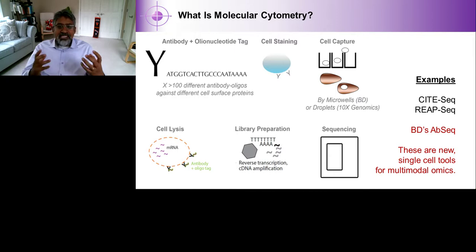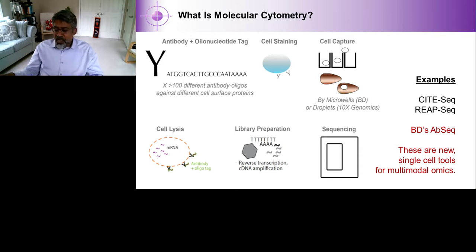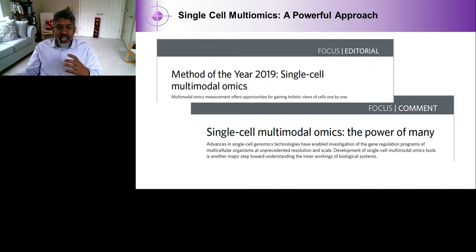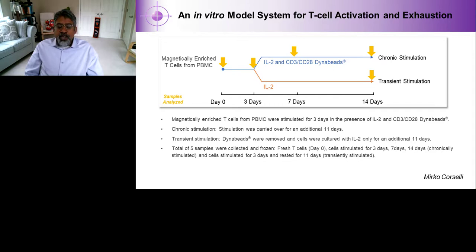These are essentially new single-cell tools that do multimodal omics — we can look at not just protein but also transcripts, or multiple modes of a cell's biology. There are also other technologies that allow us to look at metabolites, and combining those together represents multimodal technologies. This protein-plus-transcript approach is perhaps the most powerful and most common multimodal technology. It was named Method of the Year in 2019 because it offers opportunities to gain a full view of cells — and gain that full view for each of the cells in your sample.